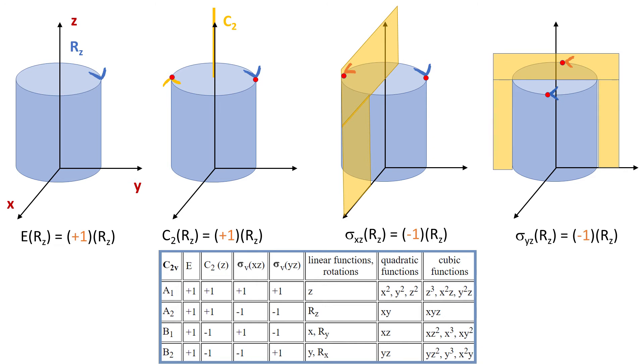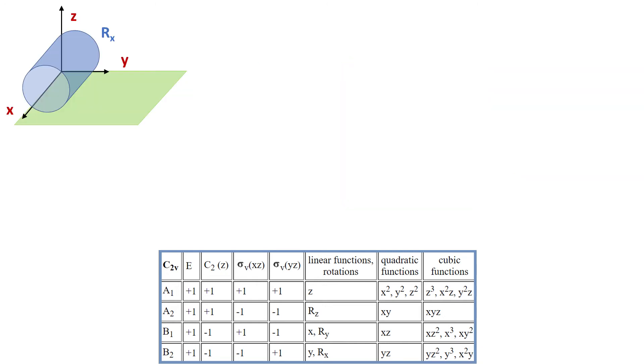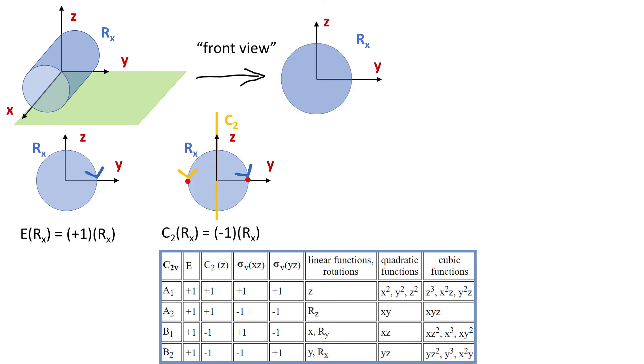So Rz gives us A2. How about Rx? When we place a cylinder according to this set of axes, then the cylinder looks from this perspective like a circle. Just notice that when we do C2 on this rotating circle, then the direction of rotation changes.